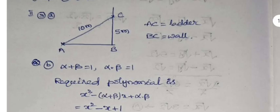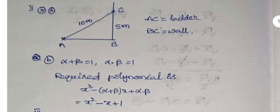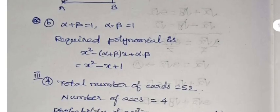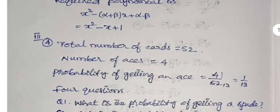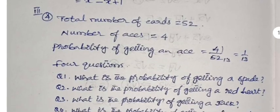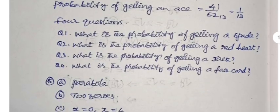Answer 3a: The diagram is to be drawn. AC is the ladder and wall is more than 5 meters tall, but the ladder touches the wall at point C, so BC is 5 meters. Answer 3b: Alpha plus beta is given as 1, alpha into beta is 1. Required polynomial is x squared minus x plus 1.